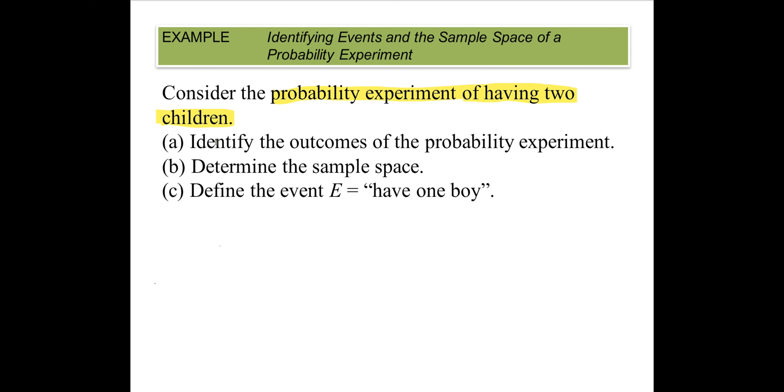Let's look at part (a). It says identify the outcomes of the probability experiment. In this case, we want to keep in mind that one kid is gonna come first and one kid's gonna come second, and whether a particular gender comes first or second is gonna make a different outcome.